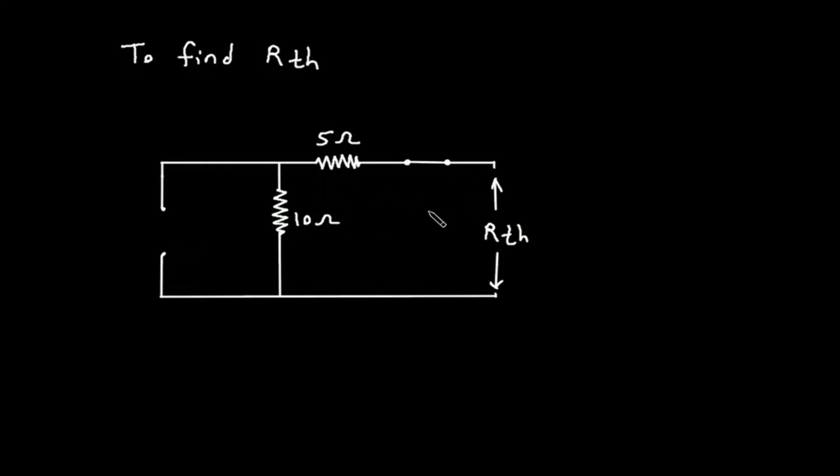So this will be our RTH. RTH is equal to - here we can see this 5 Ohm and 10 Ohm are connected in series - so 5 Ohm plus 10 Ohm. Therefore RTH is equal to RL is equal to 5 plus 10 is 15 Ohm.